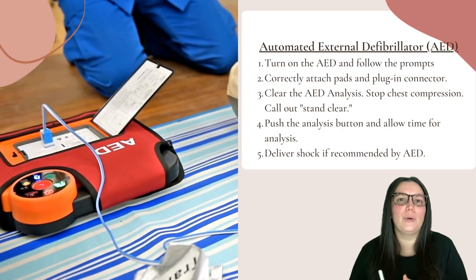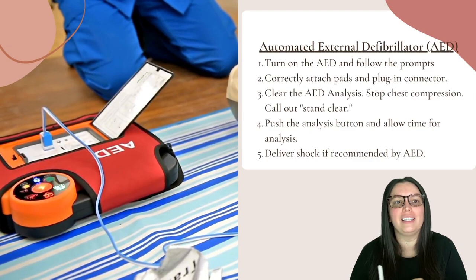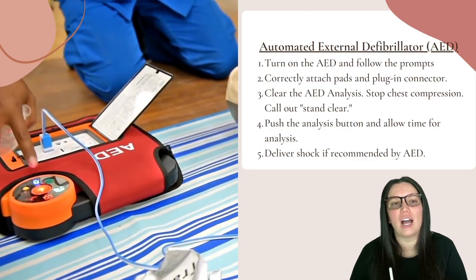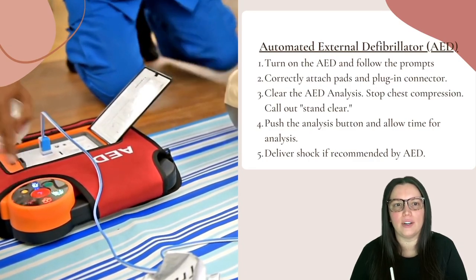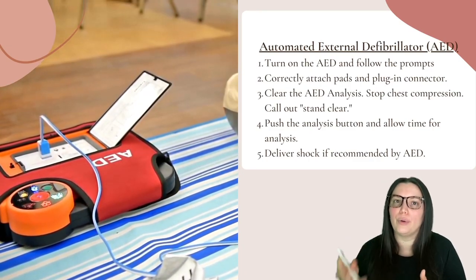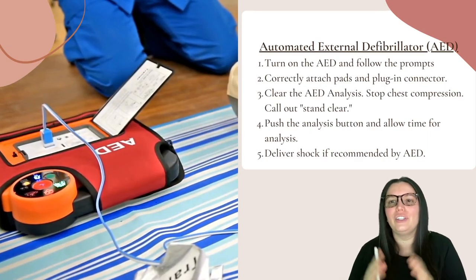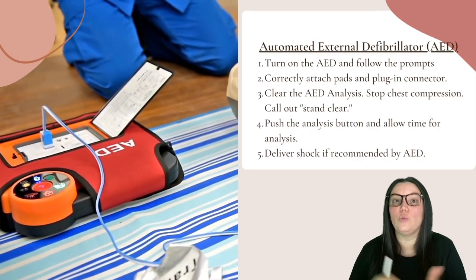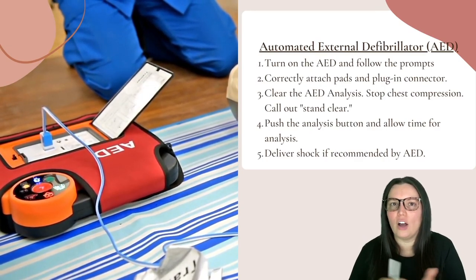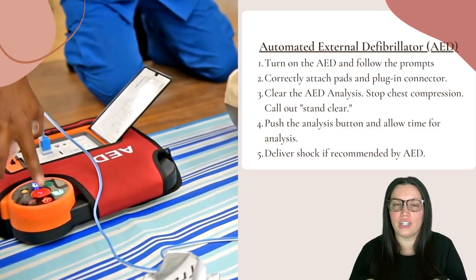The most important thing to know is that you want to perform at least five rounds of high-quality CPR — or two minutes — before doing a pulse check. However, when it comes to the AED, you want to put that on immediately; it does not change your CPR timing.